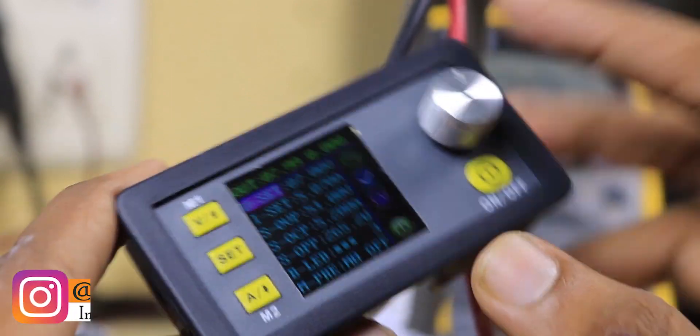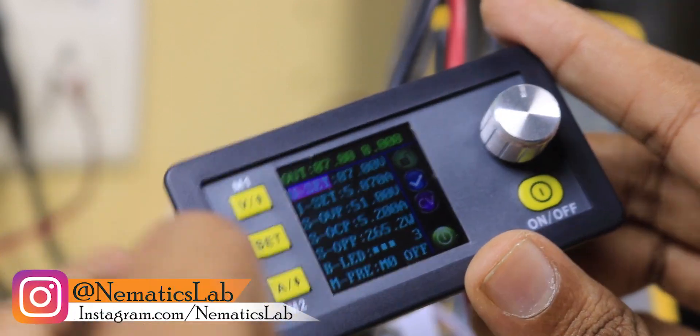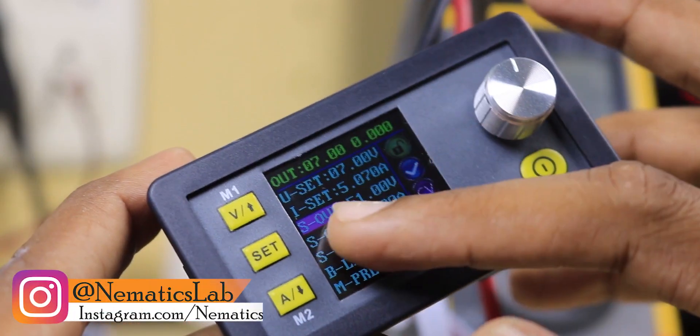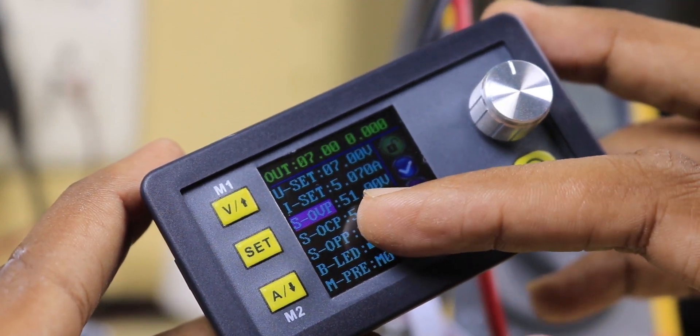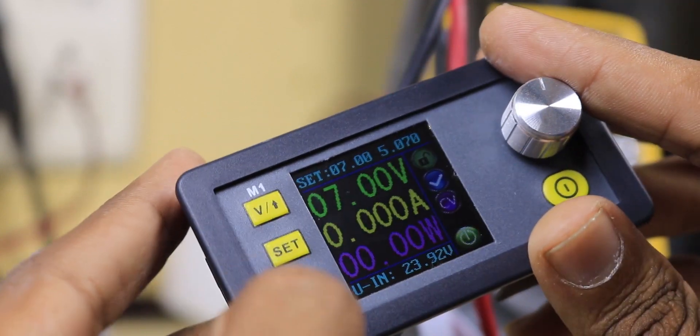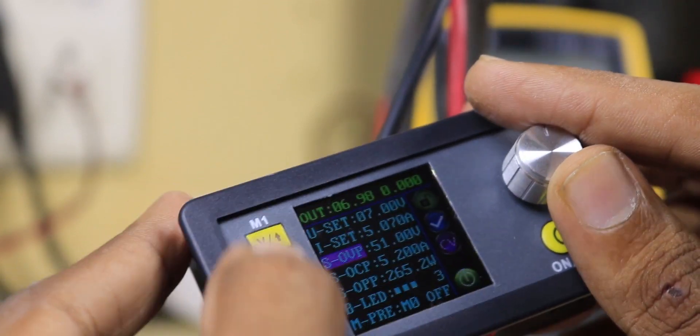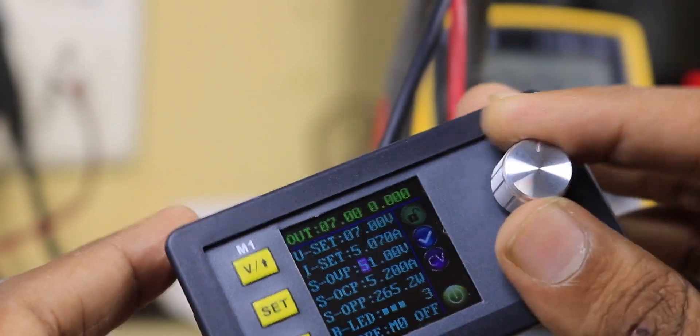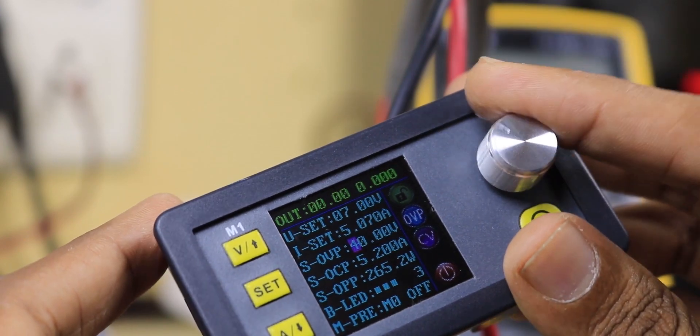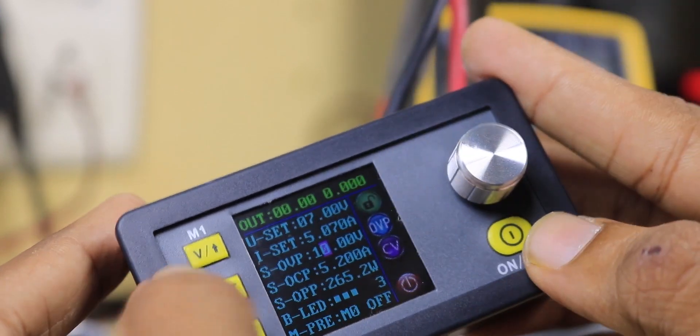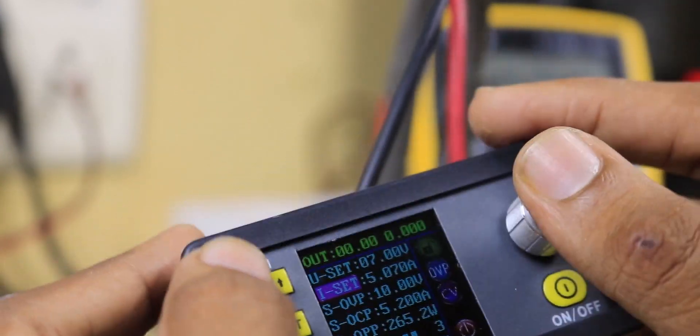You can set more parameters in this menu. There's something called S OUT which is set to 51 volts. If I go in and set it to something less, like 10 volts, now if I try to increase or decrease the voltage it won't go beyond 10 volts.